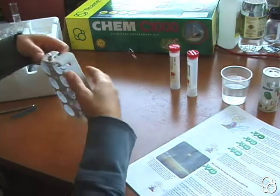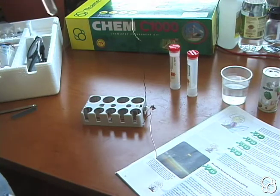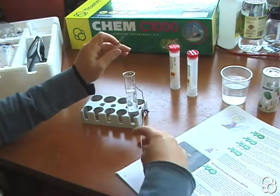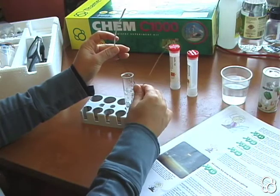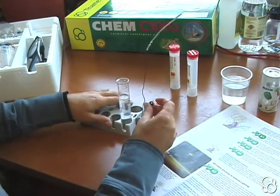Once you have that, you can put the test tube with the solution back in. You're going to put both the magnesium strip and the copper wire inside the test tube, but you don't want them to touch each other.